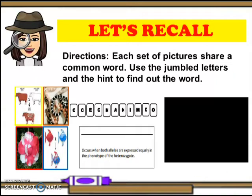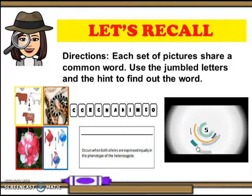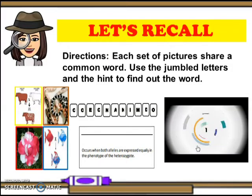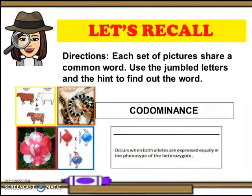Let's recall. Each set of pictures shares a common word. Use the jumbled letters and the hint to find out the word. Number one: it occurs when both alleles are expressed equally in the phenotype of the heterozygote. The answer is codominance.